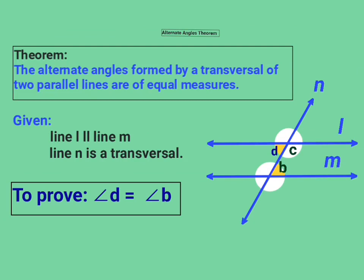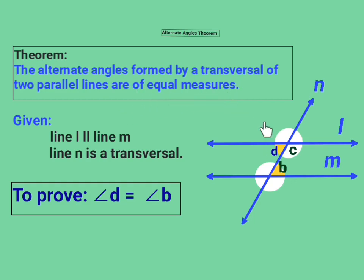Now let's prove the alternate angles theorem. Here is the statement: the alternate angles formed by a transversal of two parallel lines are of equal measure. Let's illustrate this with a diagram — line L and line M are the parallel lines, and N is their transversal. This is the given information.